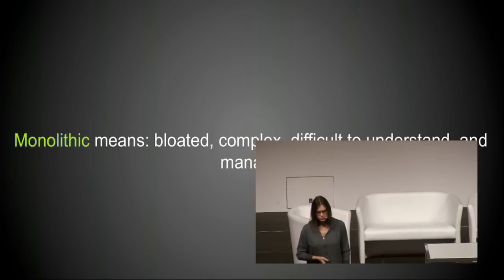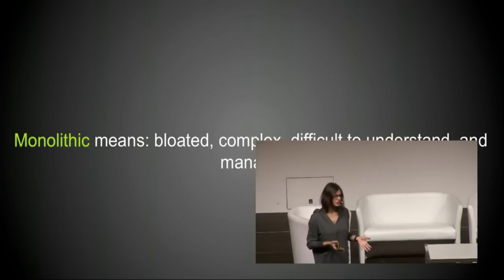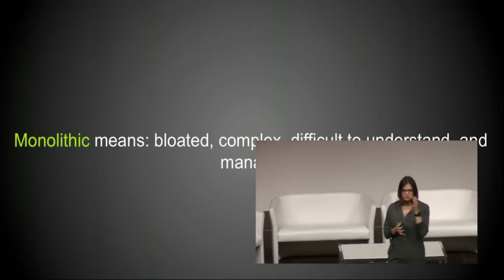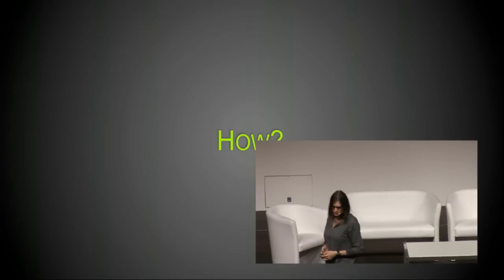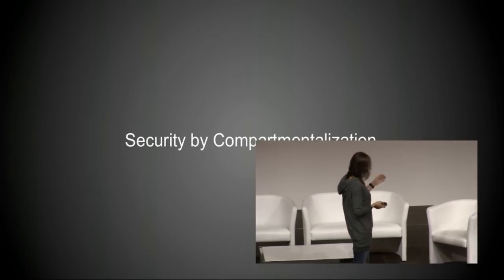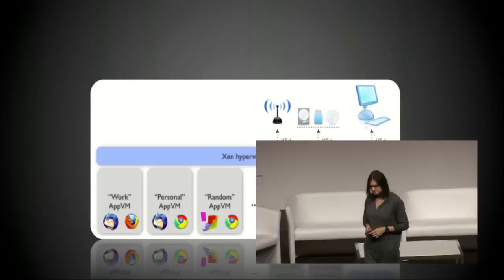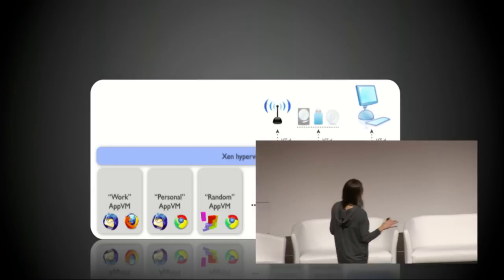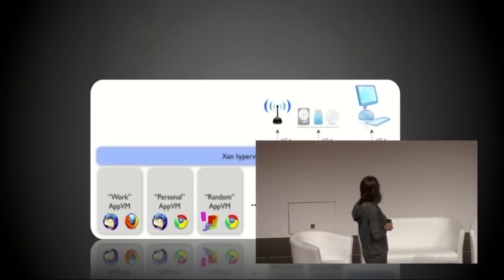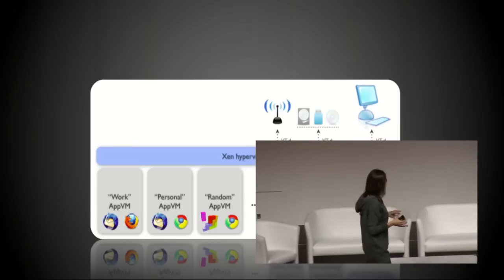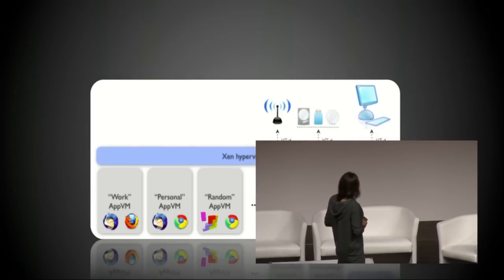Monolithic, from the security point of view, means bloated, complex, difficult to understand and manage — deciding which parts of the system can communicate with which ones and which should not, because some are trusted and some are not. The solution is security by compartmentalization. We have a thin hypervisor, which happens to be Xen; app VMs where user applications and data reside; and system service domains — for example, for networking stacks and USB stacks: a net VM and a USB VM — plus a secure admin and GUI domain.